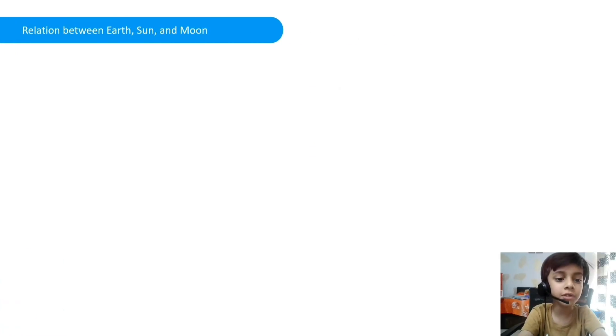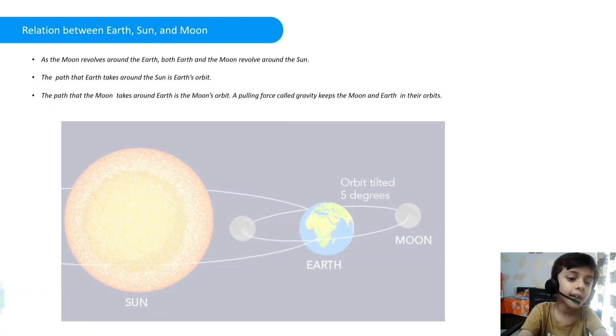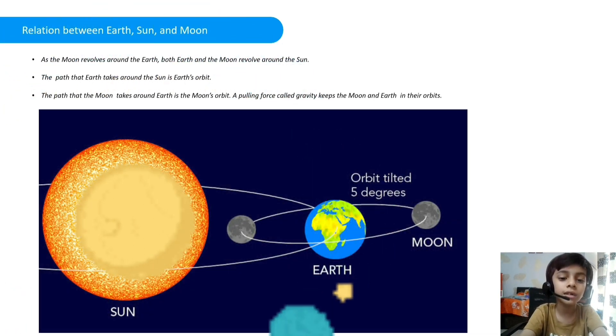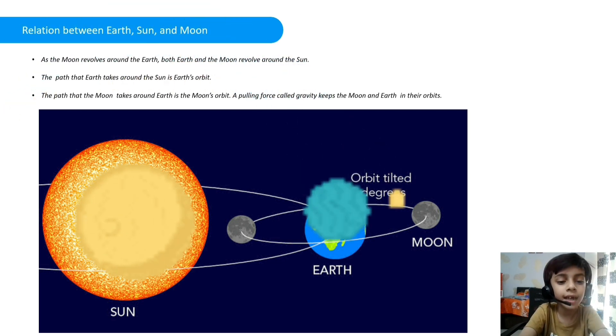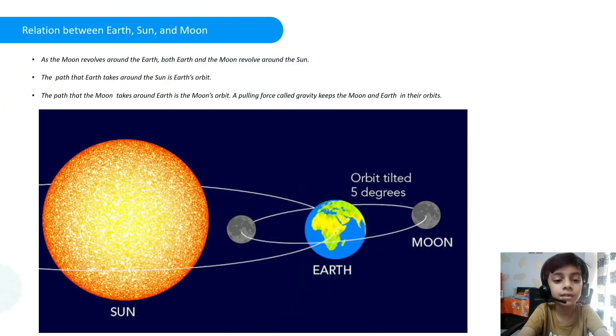Friends, do you know the relationship between Earth, Sun, and the moon? As the moon revolves around the Earth, both Earth and moon revolve around the Sun. The path that Earth takes around the Sun is Earth's orbit. The path that the moon takes around Earth is the moon's orbit. A pulling force called gravity keeps the moon and Earth in their orbits.